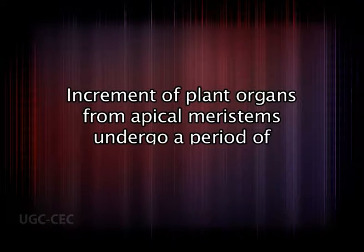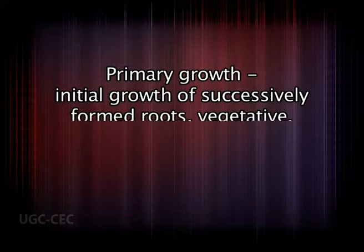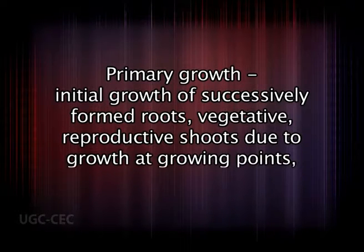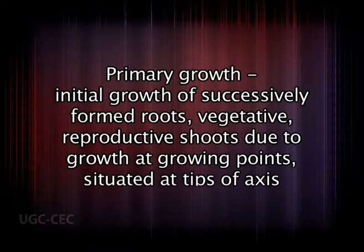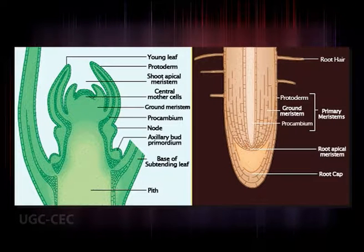When the plant has entered into the reproductive phase of its life cycle, these axillary buds may produce flowers or floral shoots. The increment of plant organs from the apical meristem usually undergoes a period of expansion in width and length. The initial growth of successively formed roots, vegetative and reproductive shoots — due to growth at growing points situated at the tips of the axis — is termed primary growth, resulting in the primary plant body consisting of primary tissues.